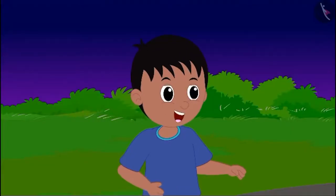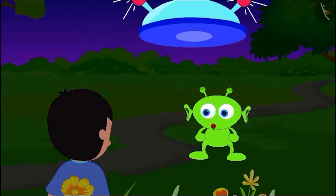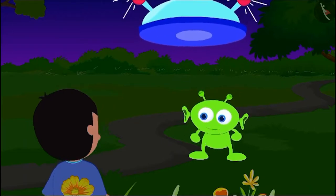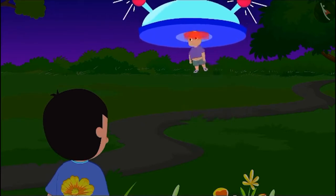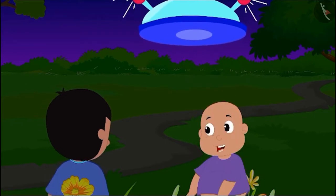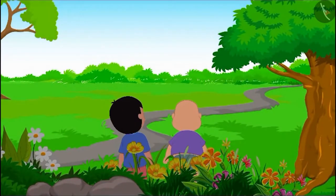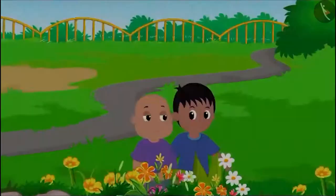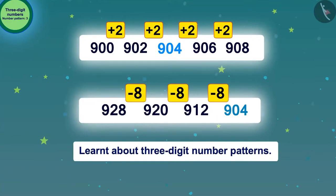Raju is very happy to get the correct answer. He quickly answered the alien. The alien said: 'You have given the correct answers to all three codes. I am returning your friend to you.' Bablu came down from the flying saucer, and the flying saucer flew away very far. Raju and Bablu happily went home. Children, we hope that this lesson has helped you to understand the number patterns made with three-digit numbers.